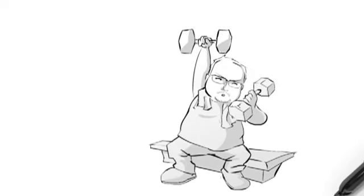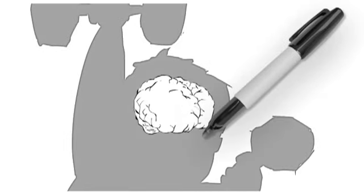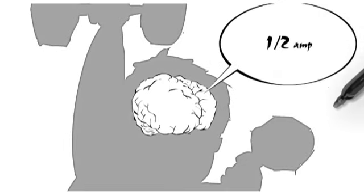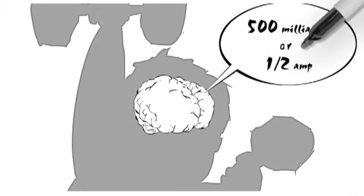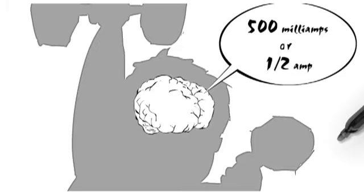Once upon a time, I used to lift weights. The human brain can only produce half an amp at full capacity—the human brain produces 500 milliamps or half an amp.